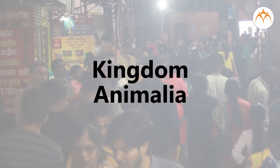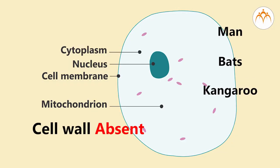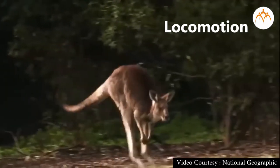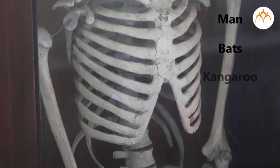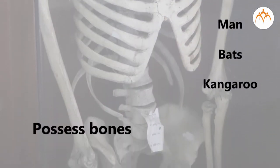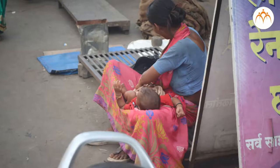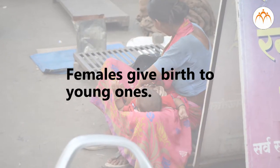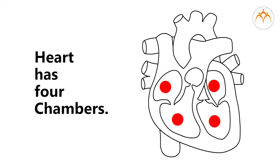In kingdom Animalia, man, bat, and kangaroo all lack cell walls in their cells, move from one place to another, and cannot prepare their food. In phylum Chordata, they possess bones inside their bodies and a notochord, a body-supporting rod. In class Mammalia, females give birth to young ones, mammary glands are present, and the heart has four chambers.